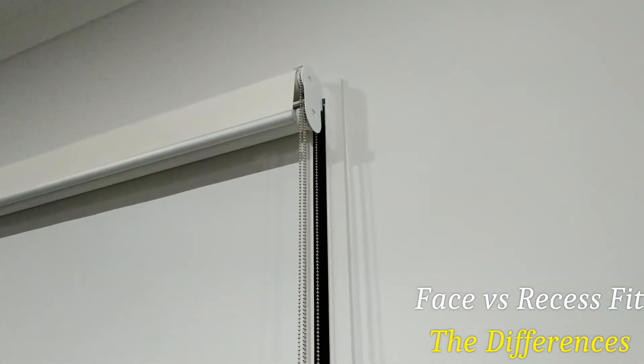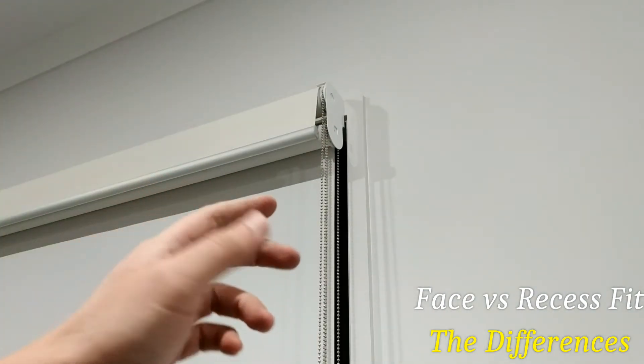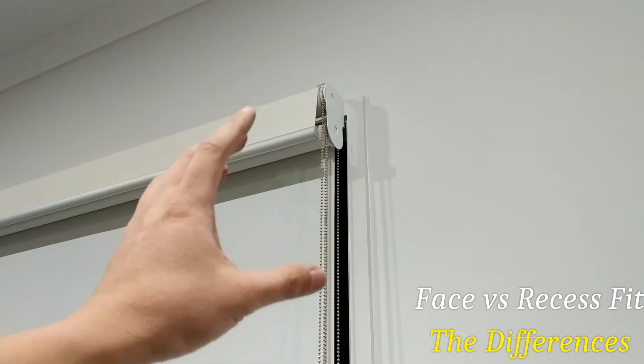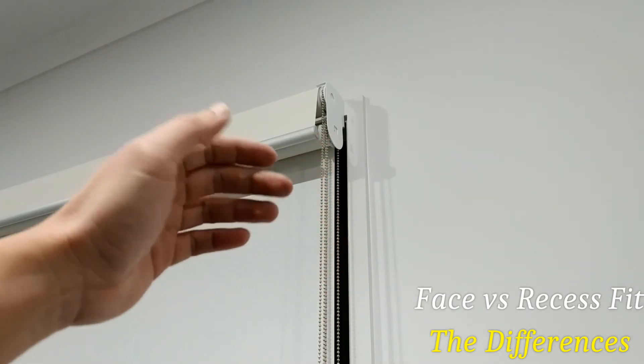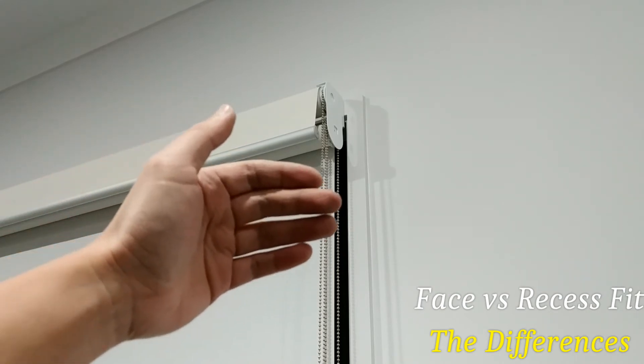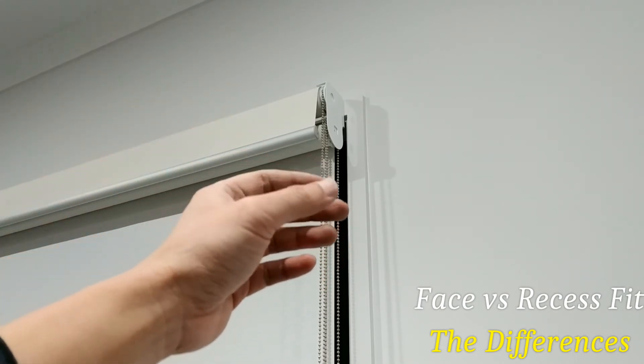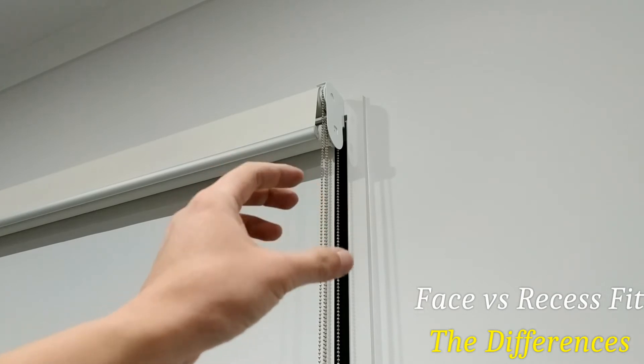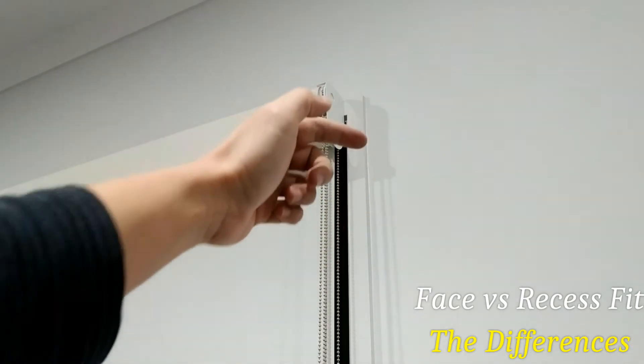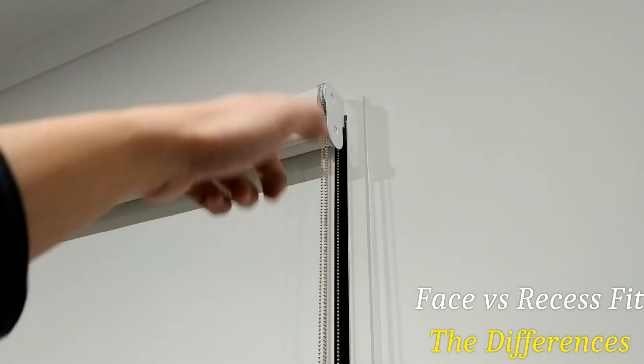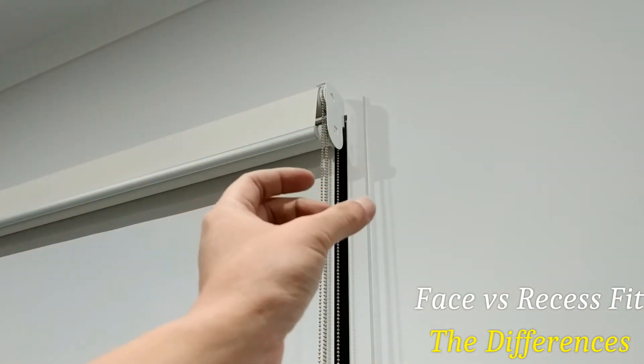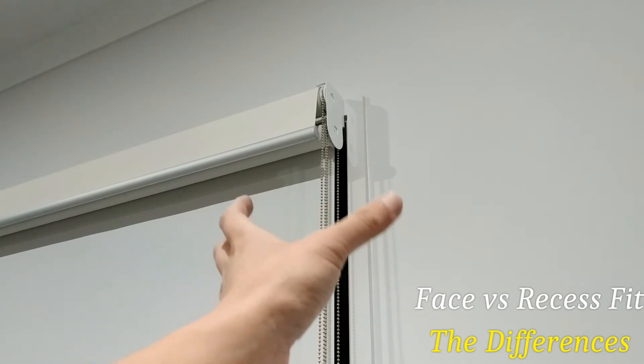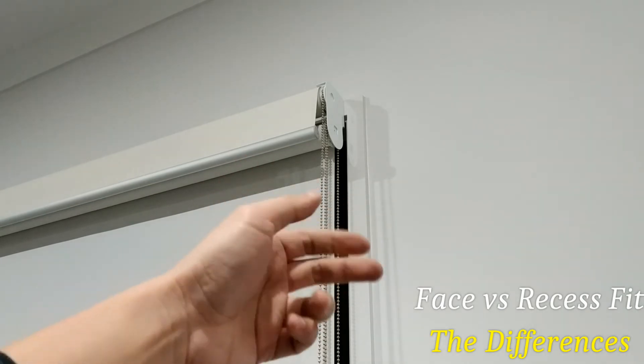I'm going back to this one. Another consideration when you're looking at the mounting, whether it's recess or face fit, is that a recess fit, you have to pretty much get the exact measurements of your window. In fact, you have to get three measurements along different parts of the window to make sure that you have enough clearance. Otherwise, if they make the roller blinds too big, it will not fit. So it's a bit more tricky like that.